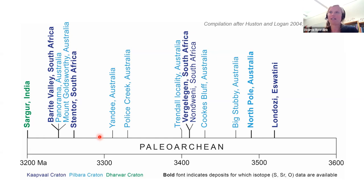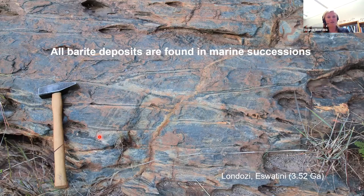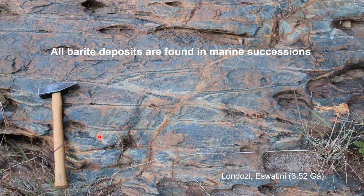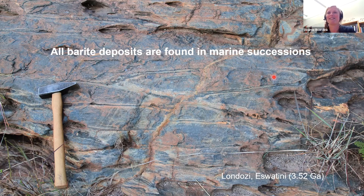There is still an ongoing debate about the exact origin of these deposits. I'd like to highlight some similarities important for discussing the geochemistry of these barites. All the barite deposits we studied are found in marine successions, though there are differences in depositional environments. Here you can see mafic pillow lavas, now metamorphosed, as host rocks for the Londozi barite deposit in the Barberton Greenstone Belt. All deposits are hosted in volcanic clastic or sedimentary rocks, but all are part of marine settings.